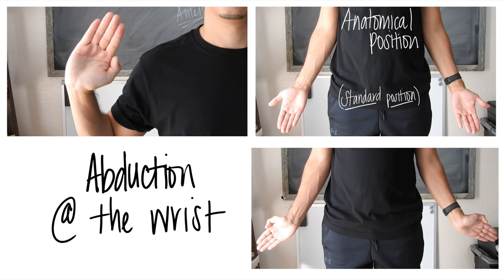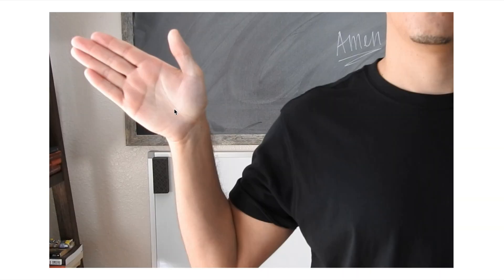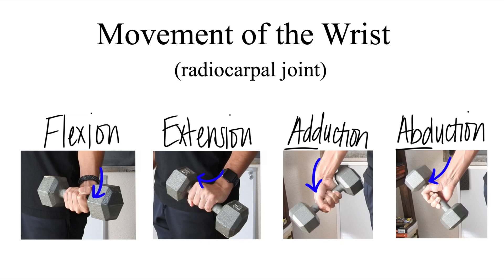Just because the wrist is at a different angle, you always have to go back to the anatomical position. Make sure you understand this information — it's likely to appear on the MBLEX, which has 11 to 12 questions on kinesiology. Check out the other videos on this YouTube channel if you need more help before taking the MBLEX. Have a wonderful week ahead, and I'll see you in the next video.